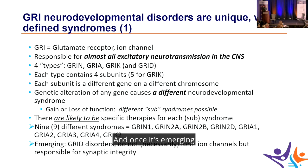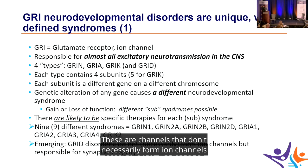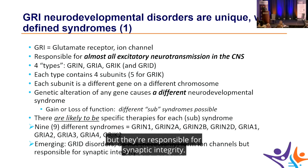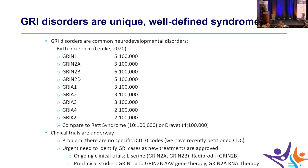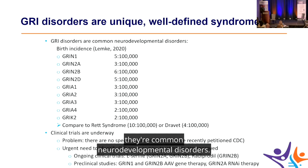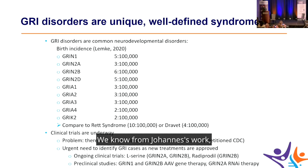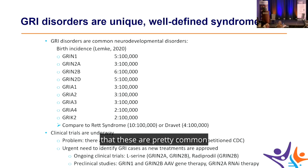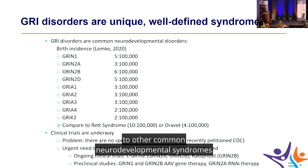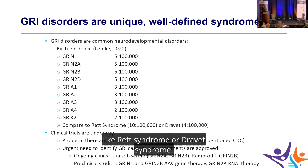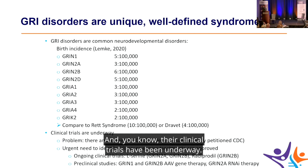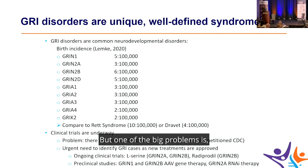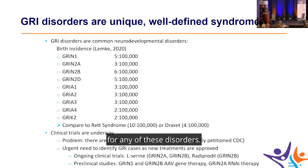Genetic alterations of any gene cause a different neurodevelopmental syndrome. Gain or loss of function, in our theory, causes a different sub-syndrome within that. There are likely specific therapies for each sub-syndrome, yielding at least nine different syndromes across the disorders. Emerging are GRID disorders — channels that don't necessarily form ion channels but are responsible for synaptic integrity. GREE disorders are common neurodevelopmental disorders, comparable in birth incidence to Rett syndrome or Dravet syndrome.